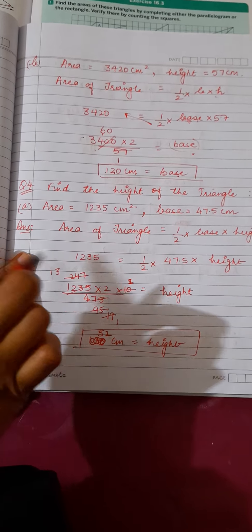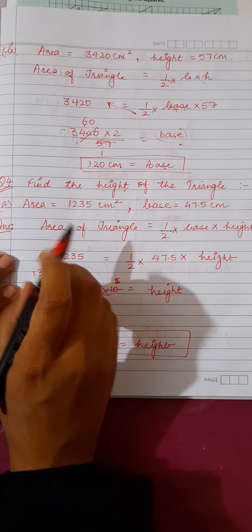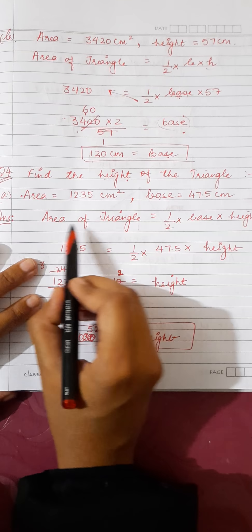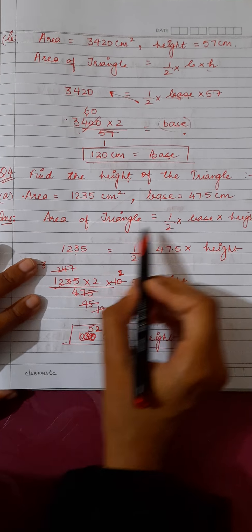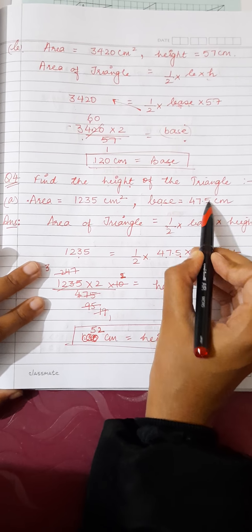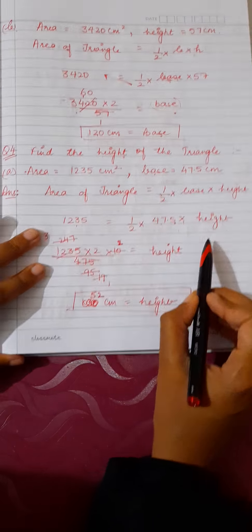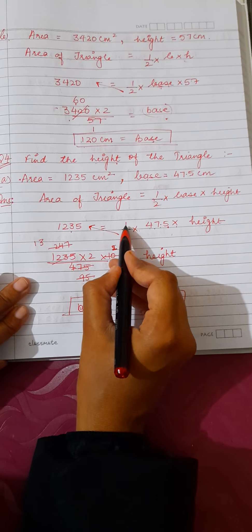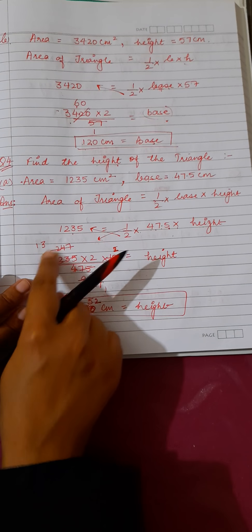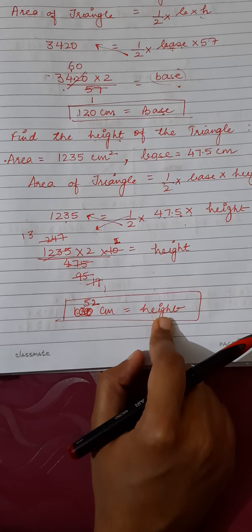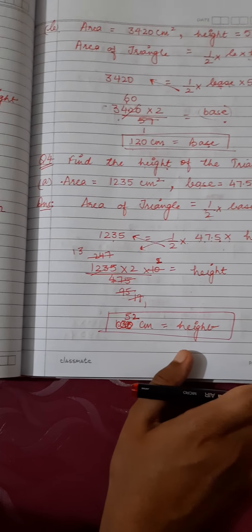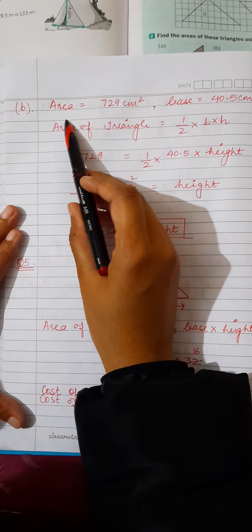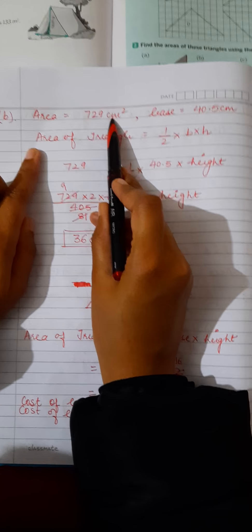Question number four: find the height given the area and base. Area = half × base × height. The area is 1235, the base is 47.5, and we need to find the height. Rearranging: height = (2 × 1235) / 47.5. Solving gives the height as 52 centimeters.